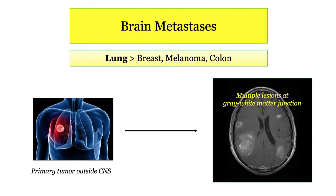Before we get into the primary brain tumors, let's talk about brain metastases. Mets to the brain are just about as common as primary tumors. Suspect brain mets when you have a primary tumor elsewhere, especially in the lung, and also when you have multiple lesions spread throughout the brain, particularly at the gray-white matter junction. The patient will present with usual signs and symptoms of their primary tumor, like hemoptysis and weight loss for lung, but also start experiencing new seizures or a new focal neurodeficit.